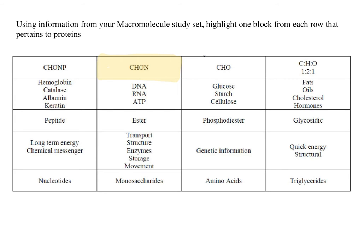In your second row, you're going to highlight the box that is an example of different types of proteins. The box you should have highlighted is the box with hemoglobin, which is a protein in your blood cells; catalase, which is an enzyme; albumin, which is another protein found in your blood; and keratin, a protein used for structure.